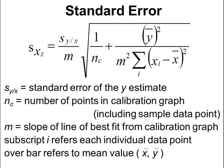To treat the errors for this type of calibration, we use the equation: the standard error of the extrapolated x-value equals the standard error of the y estimate, Sy/x, divided by the gradient of the line of best fit, multiplied by the square root of 1/nc — the number of calibration points including the sample data points — plus the mean of all recorded y values squared, divided by the gradient squared times the sum of the individual spike values minus the mean spike, squared. That is how you treat the error in this situation.